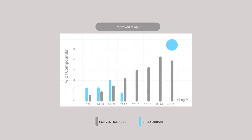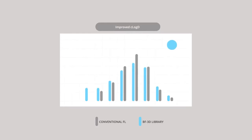And on this chart, you can see the improvement in the C log p parameter compared to the conventional library. And finally here, you can see the improvement in the C log d parameter.